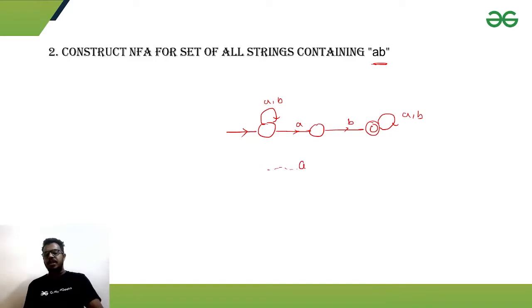Basically, we will check for that whether ab is somewhere in the string or not. By this NFA, we can accept the given language. But for DFA, you know that the construction is little bit complex than the given NFA.